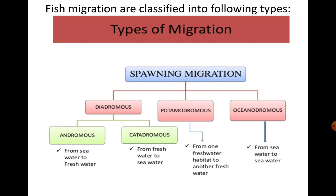Potamodromous migration is from one fresh water habitat to another fresh water habitat — they remain in fresh water but move from one place to another. Oceanodromous migration is from sea water to sea water only — the fishes move from one region to another within the ocean. In diadromous migration, you have anadromous and catadromous, and the syllabus requires learning about these two. We will take examples and learn what changes take place during the course of migration.